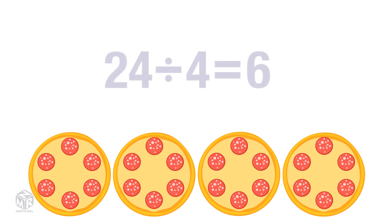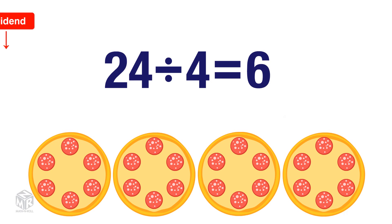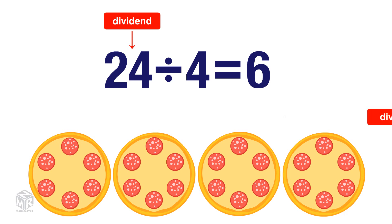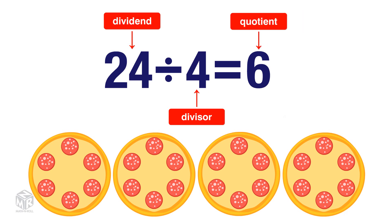We had 24 pieces of pepperoni and we divided them into 4 equal groups. Each group had 6 pepperonis, so now we have our division equation: 24 divided by 4 equals 6. 24 is our dividend, or the number that is being divided. 4 is our divisor, or the number that we are dividing by. And 6 is our quotient, or the answer.